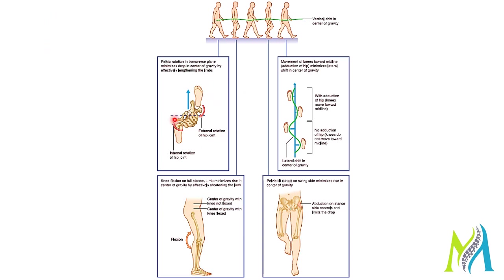The first determinant is pelvic rotation. The pelvis rotates in the transverse plane to reduce the drop in the center of gravity. The leg moving forward undergoes external rotation of the hip, while the leg that is pushing off from behind undergoes internal rotation — starting from heel contact at the front to the forefoot push-off at the back.